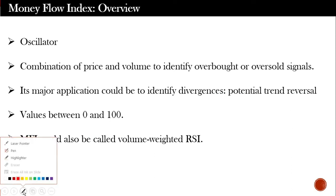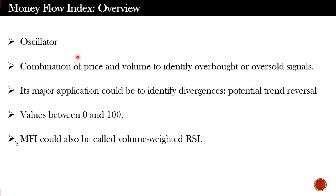Primarily, money flow index is an oscillator. It moves in the range of 0 to 100. What it does is it combines price and volume, and in combination generates overbought and oversold signals. Its major application is to identify divergences — divergence between price and this indicator. Money flow index as an indicator is used in two things: to identify overbought/oversold levels and its value ranges between 0 to 100.